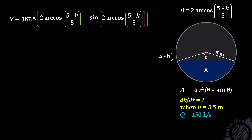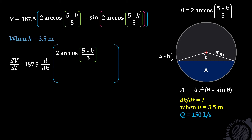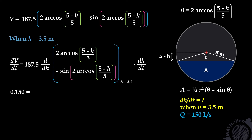Fortunately, we can differentiate this using the chain rule. When h is 3.5, we differentiate the equation inside the bracket with respect to time and include dh/dt. If you are lost in this approach, please refer to our previous video on differentiation by chain rule. dV/dt is 150 liters per second, which equals 0.15 cubic meters per second — simply 150 divided by 1,000.